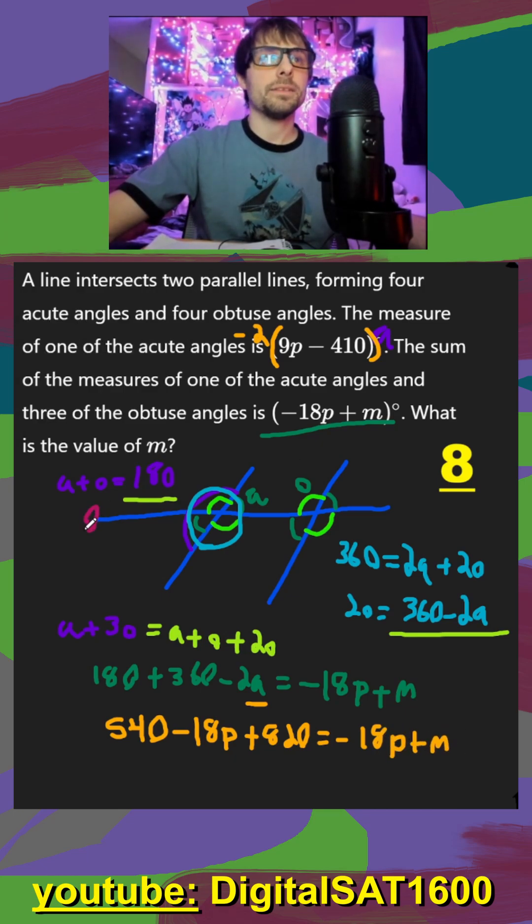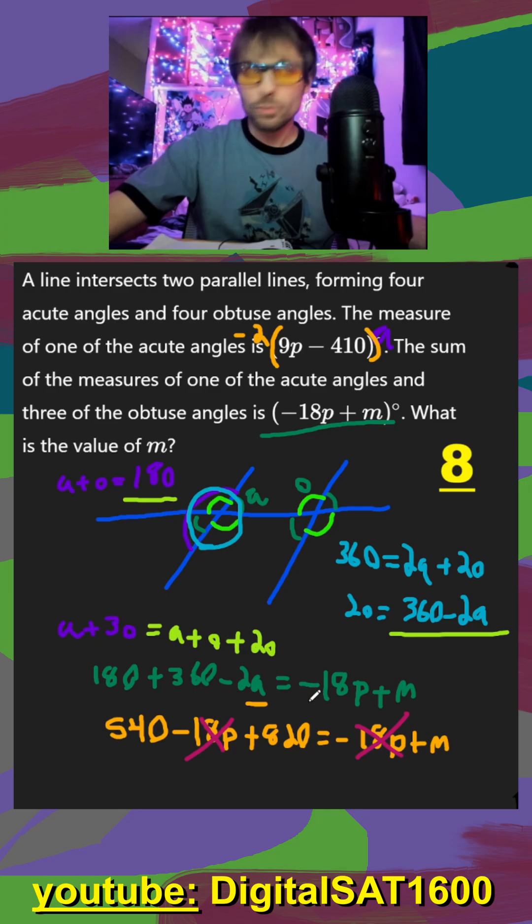And finally, we can add 18P to both sides. That gets rid of that. And then M is just 540 plus 820, which I'm getting here, M is going to be equal to 1360.